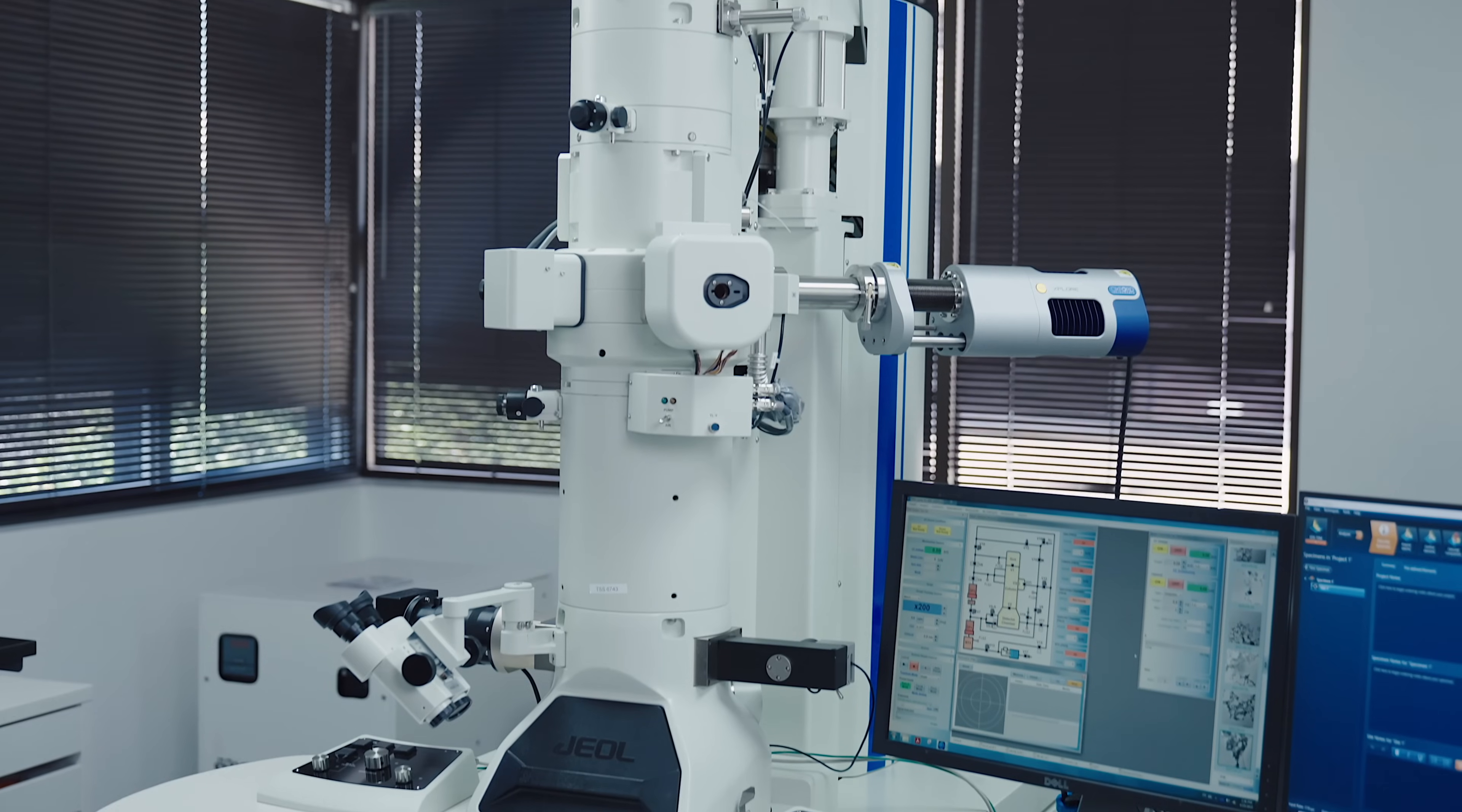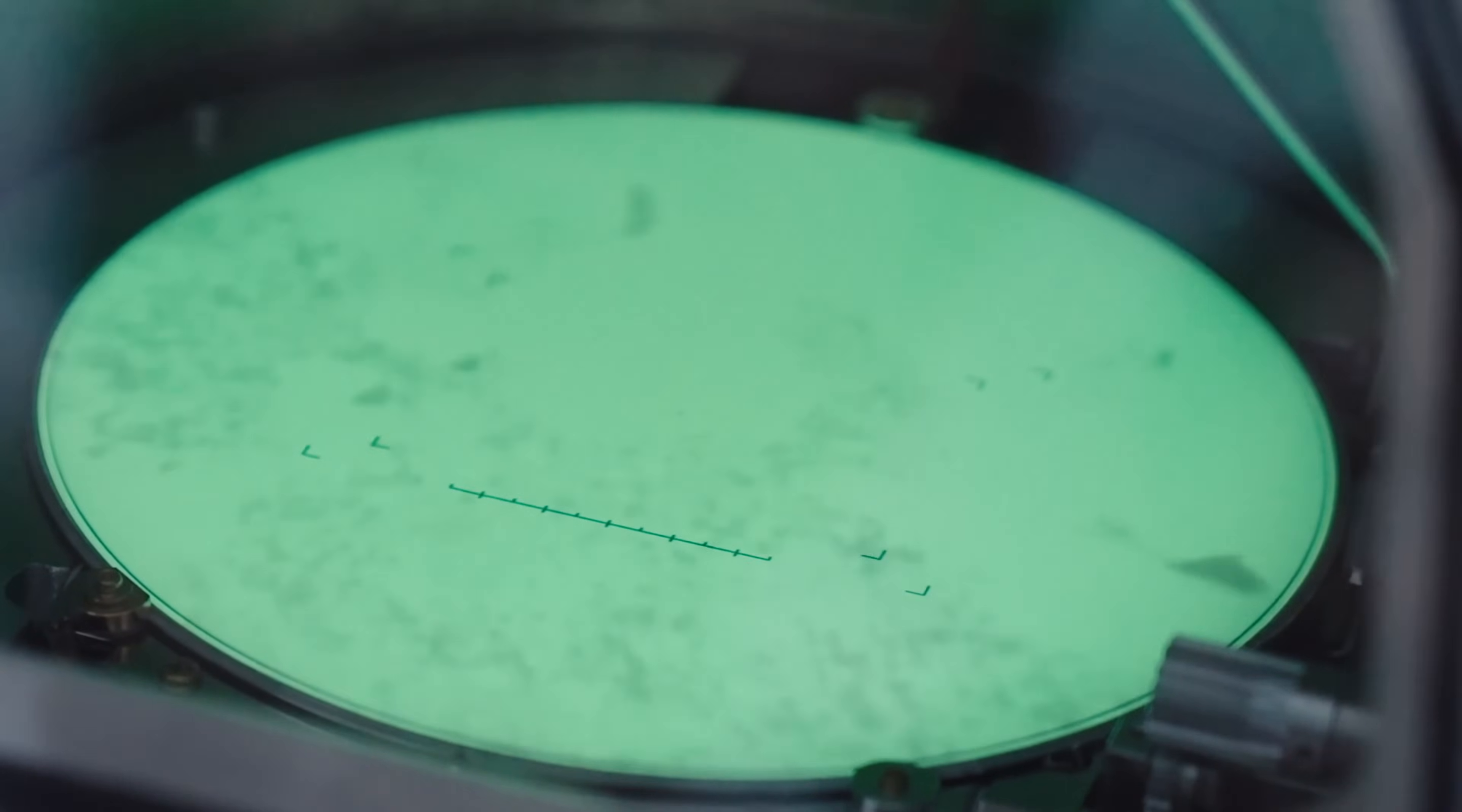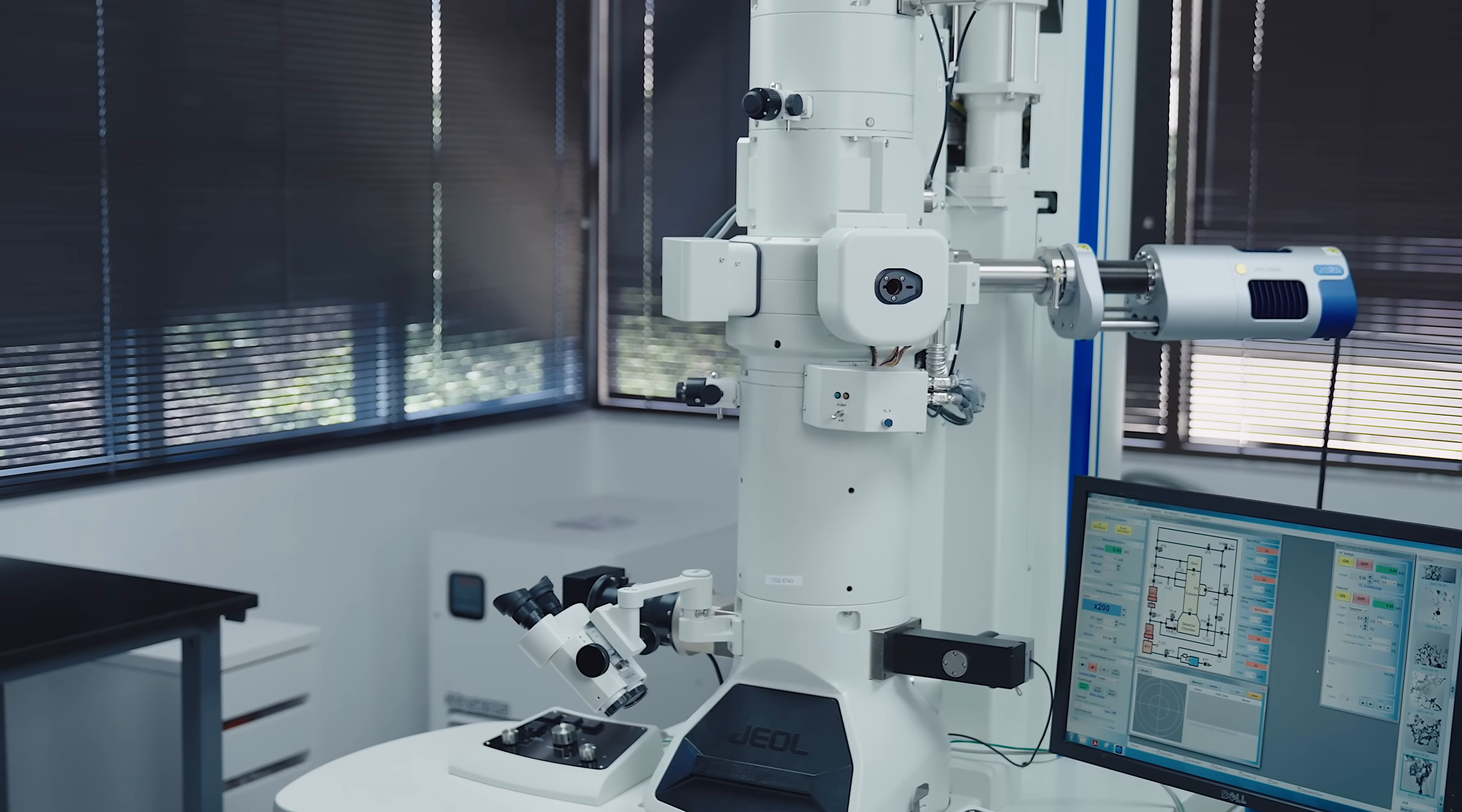This machine allows us to examine samples at a much higher magnification than we would be able to normally. It also allows us to examine for elemental composition. Both of these things allow us to look at such sensitive items as combustion byproducts such as soot, as well as being able to determine chemical composition of asbestos in the sample.